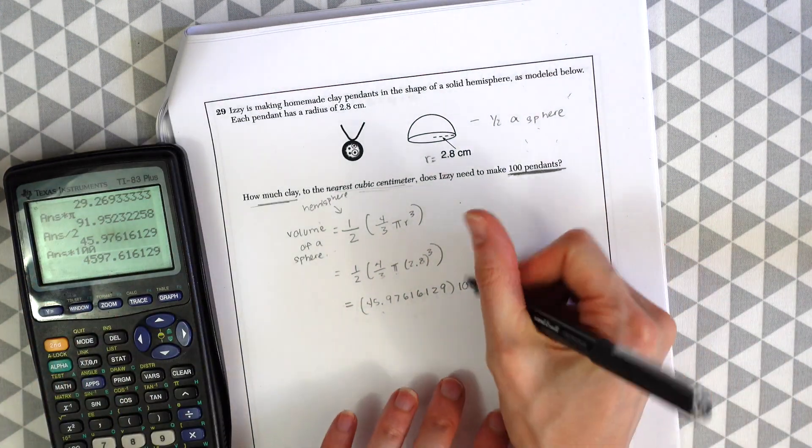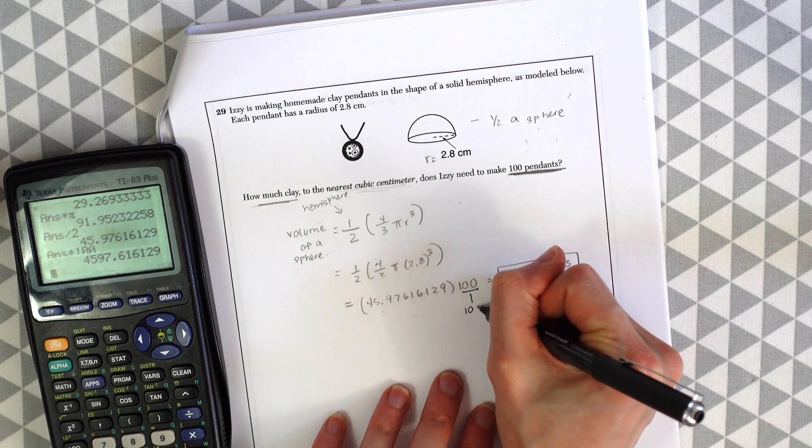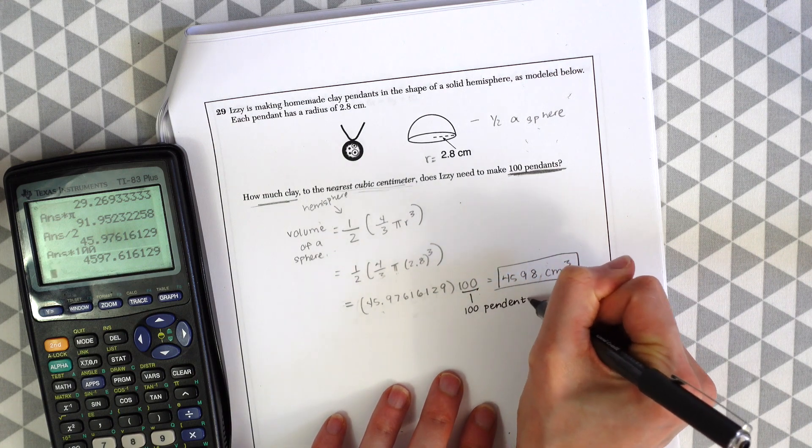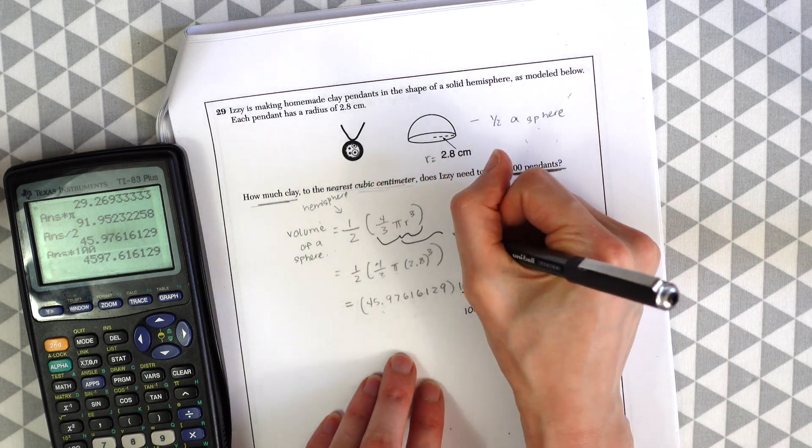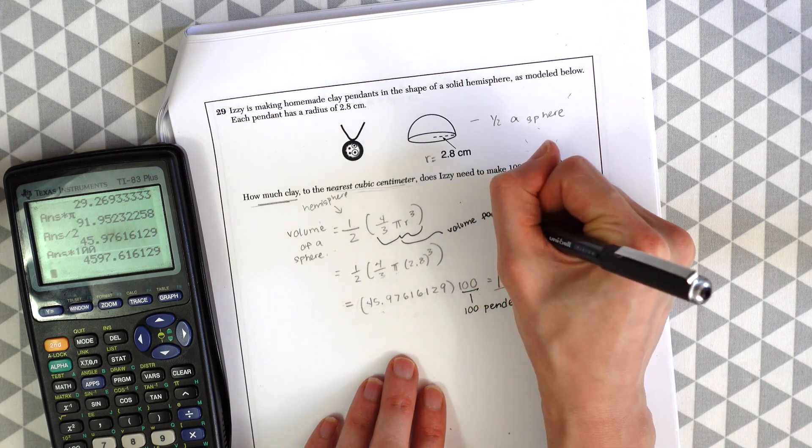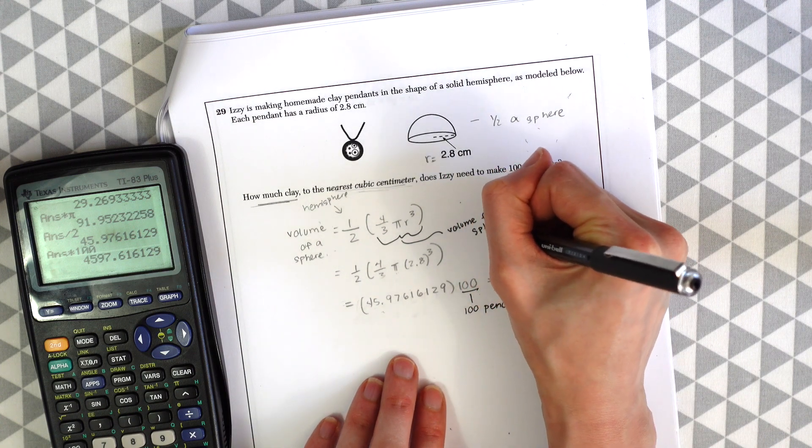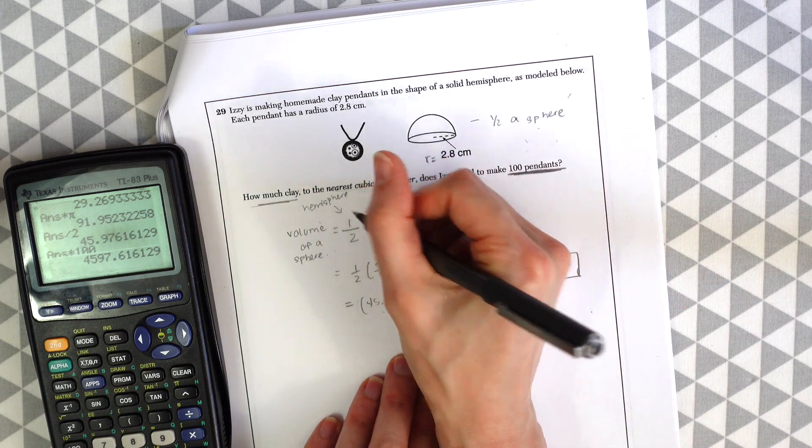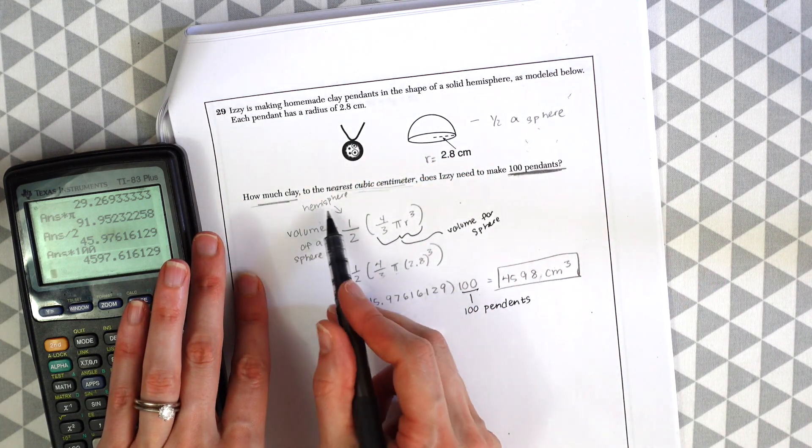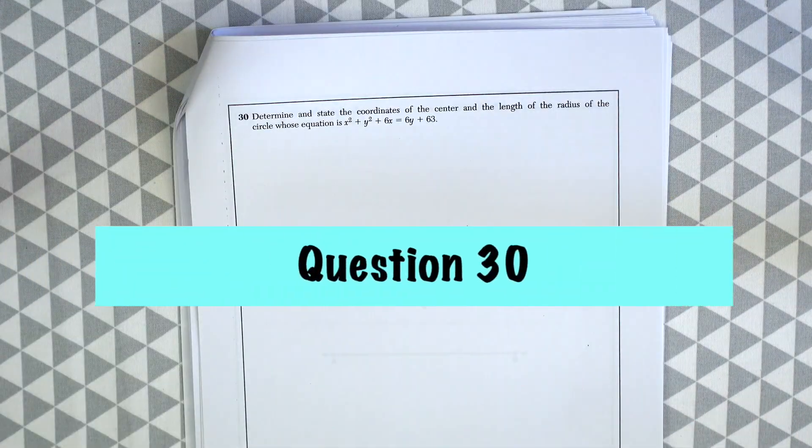So just a reminder of where things came from. This is for 100 pendants. This is the volume for sphere. And then this is, we're multiplying times a half because it's a hemisphere. On to question 30.